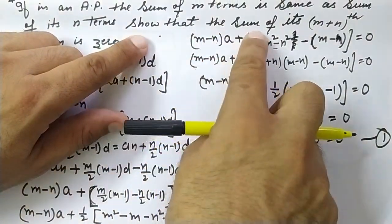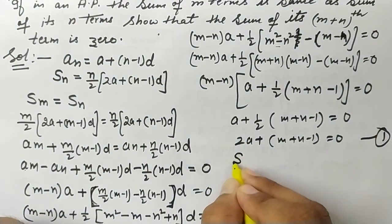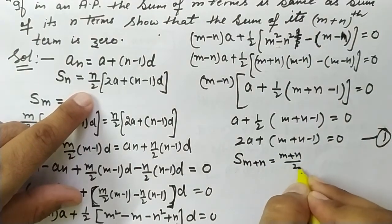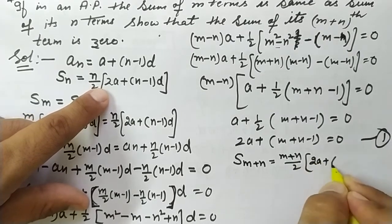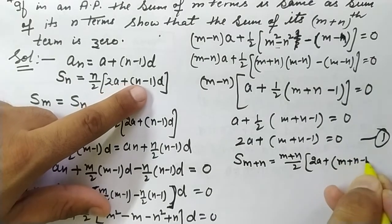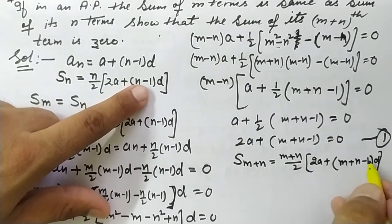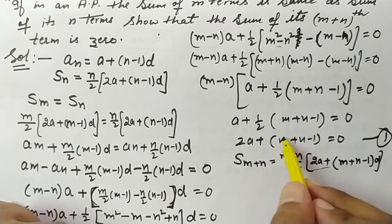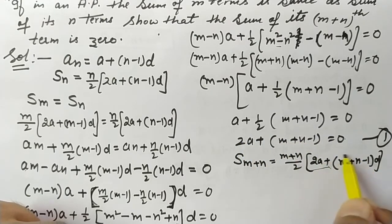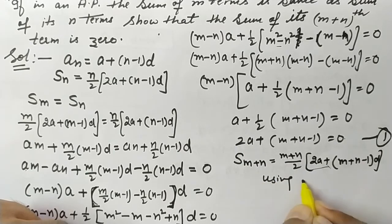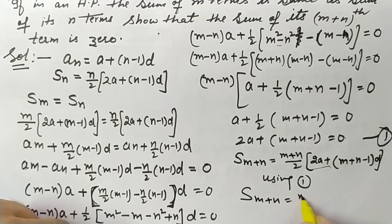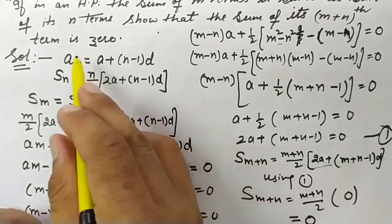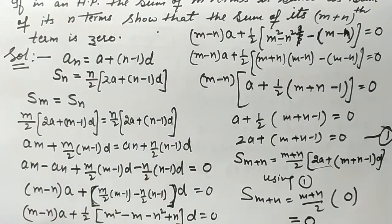Now we need to find S(m+n). Using the sum formula: S(m+n) = (m+n)/2 × [2a + (m+n−1)d]. From Equation 1, the bracket [2a + (m+n−1)d] = 0. Therefore S(m+n) = (m+n)/2 × 0 = 0. This proves that the sum of (m+n) terms is zero.